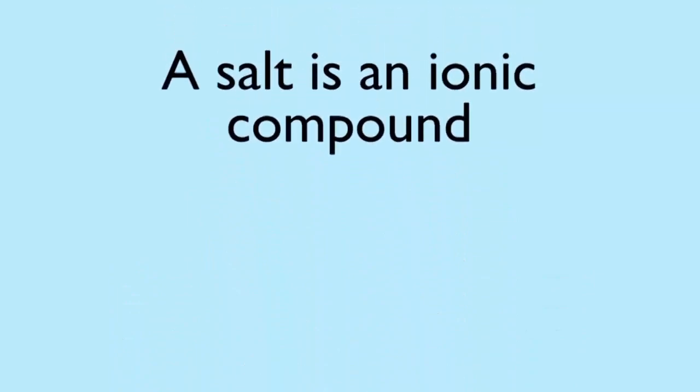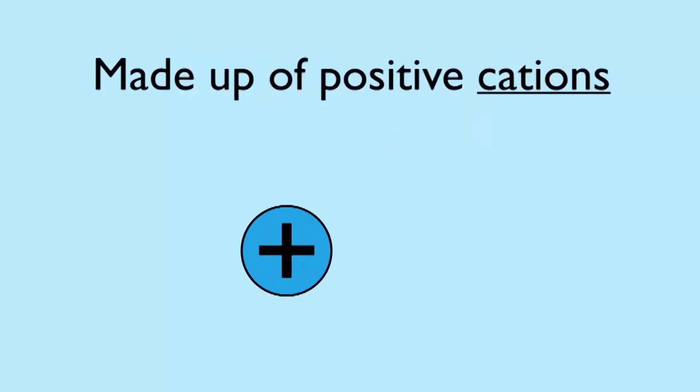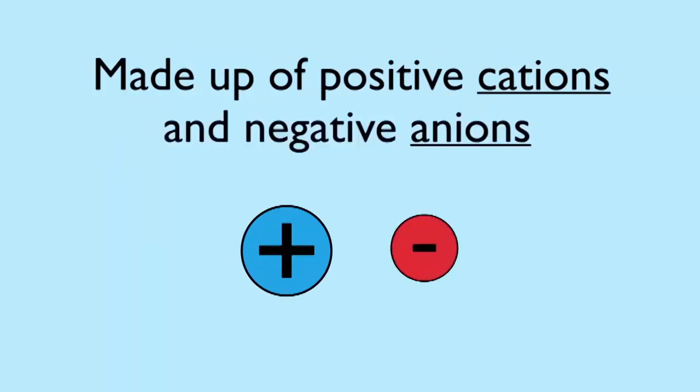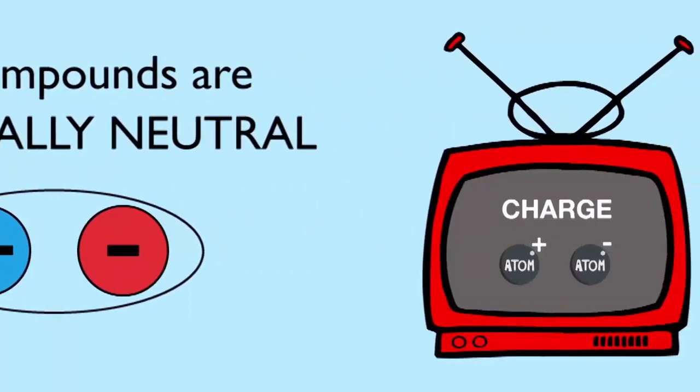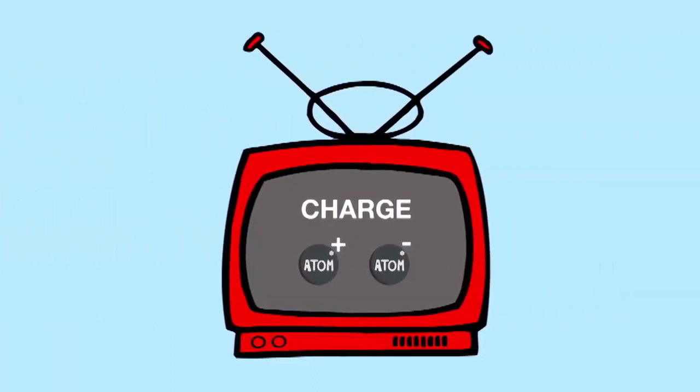Let's start with what a salt is. It's an ionic compound made up of one or more positively charged cations and negatively charged anions. An ionic compound is electrically neutral. Watch this video if you'd like a refresher on this concept.